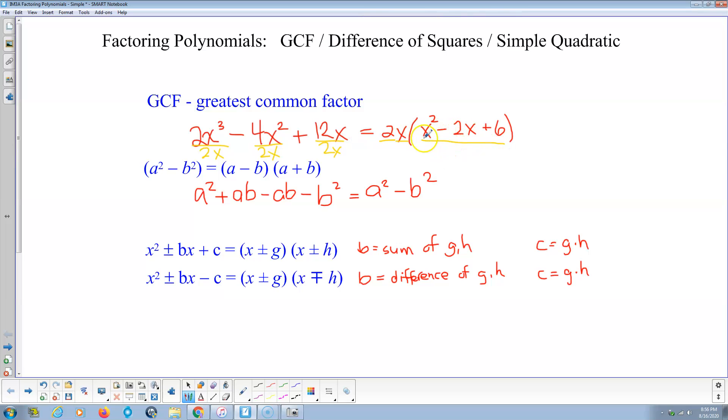Okay, and we always check. This is a very common mistake for students. It takes less than 5 seconds to check. 2x times x squared is 2x to the third, check. 2x times negative 2x is negative 4x squared, check. 2x times 6 is 12x, check. How hard was that? And there's our factored form.